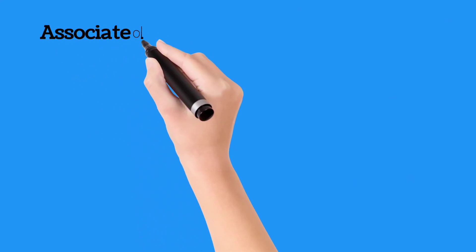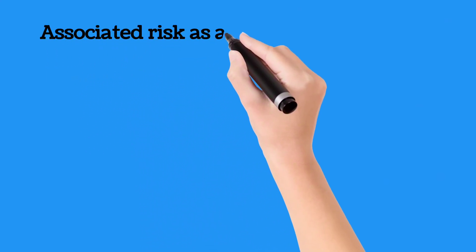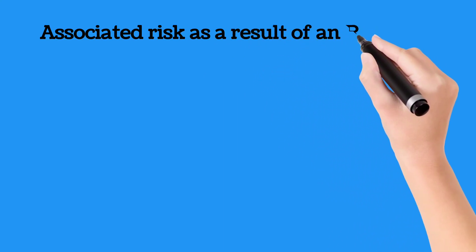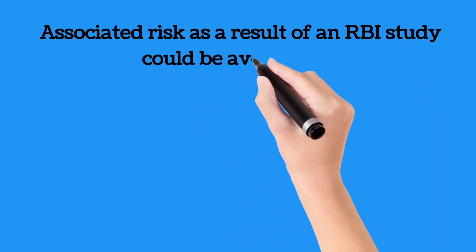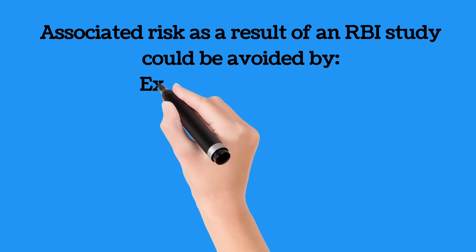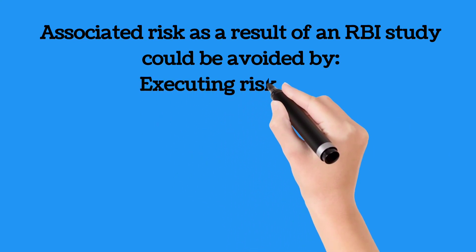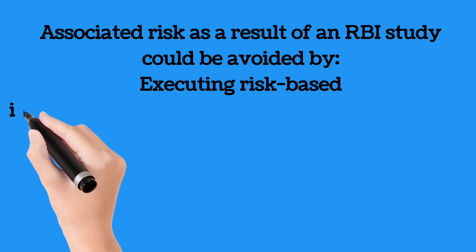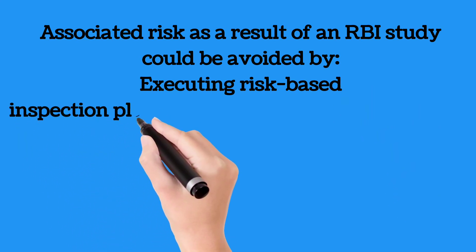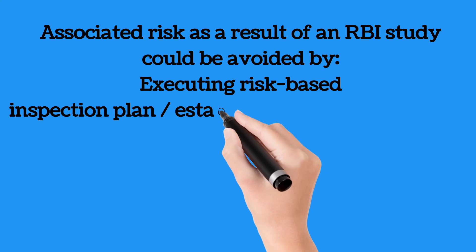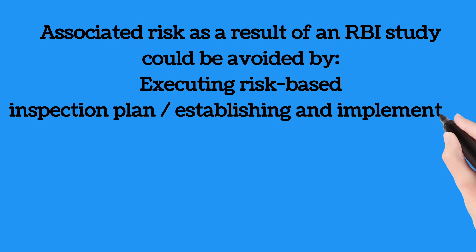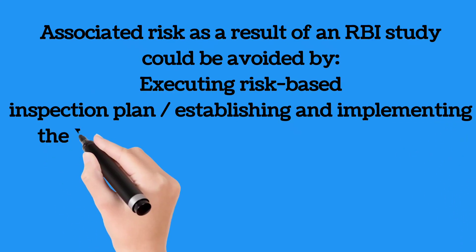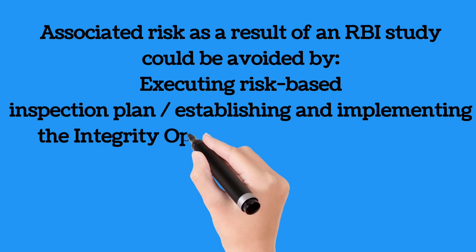The calculated risk as a result of an effective risk-based inspection study should be controlled or contained by adopting or executing a risk-based inspection plan. Integrity operating windows, IOWs, should be properly generated and implemented at site. The recommendations made based on repair, replacement, modification, redesign, and re-rating should be properly considered as well. Process modifications should also be considered as an alternative option.